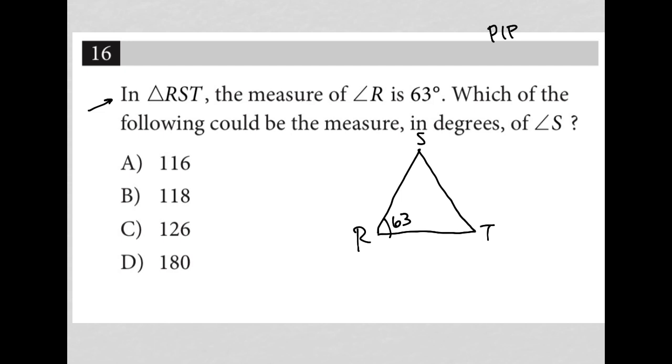Okay, so what do we know? We know we have an angle S, we have an angle T, and we have angle R that's 63 degrees. We know that angles R plus S plus T must be equal to 180.